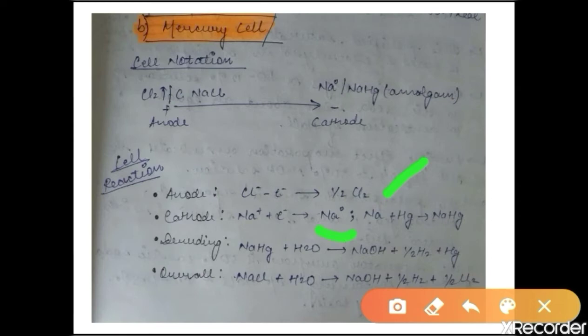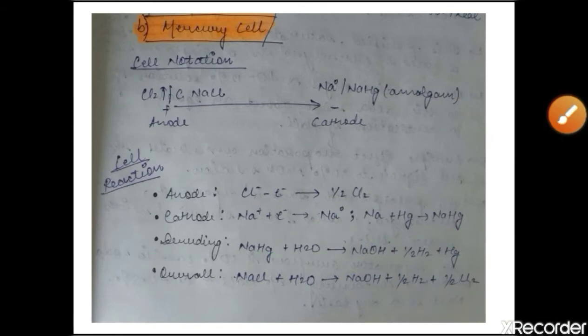To summarize the mercury cell reactions: at the anode, chloride ions are oxidized to chlorine; at the cathode, Na⁺ ions are reduced to metallic sodium, which then reacts with mercury to form an amalgam. In the denuding/decomposer tank, the amalgam reacts with water to give sodium hydroxide (caustic soda), hydrogen gas, and metallic mercury. The overall reaction is: NaCl + H₂O → NaOH + Cl₂ + H₂.